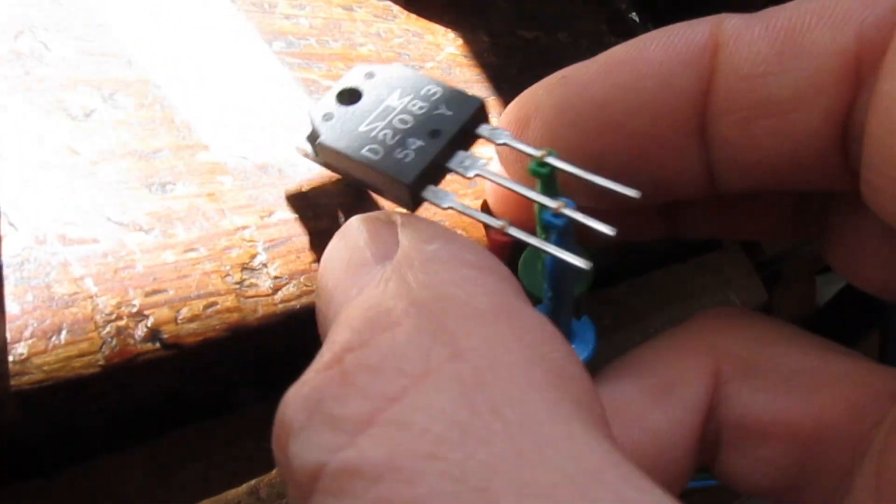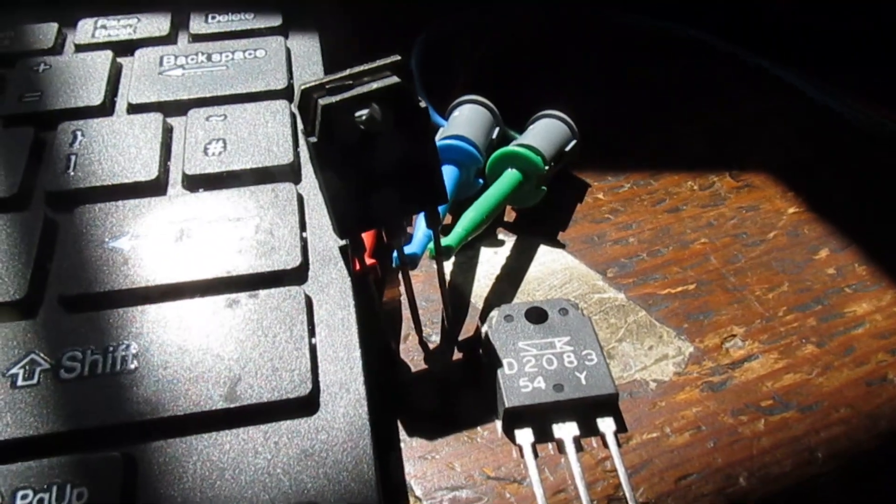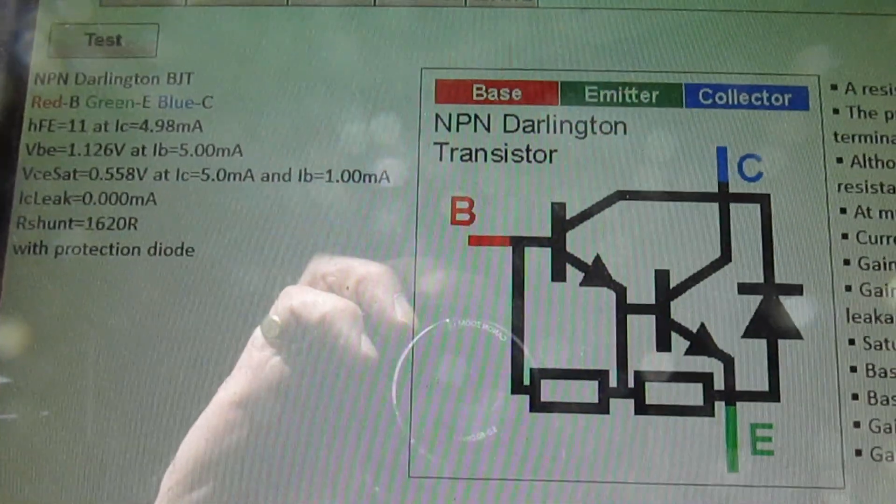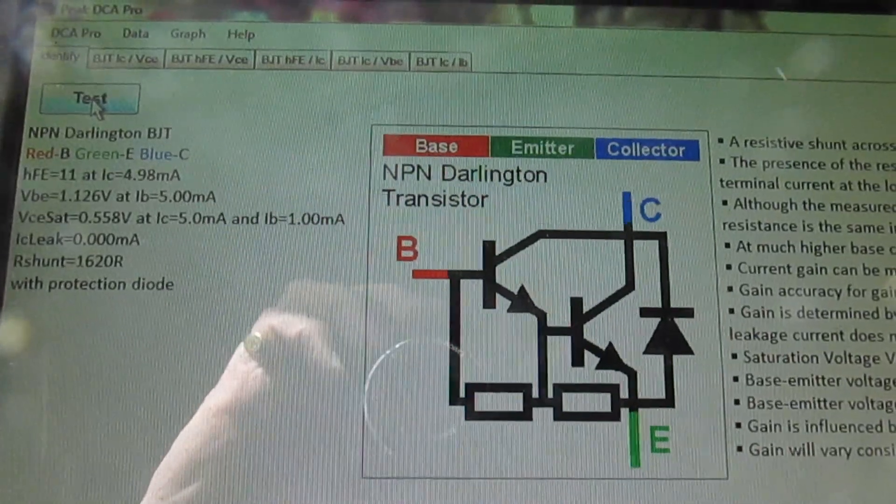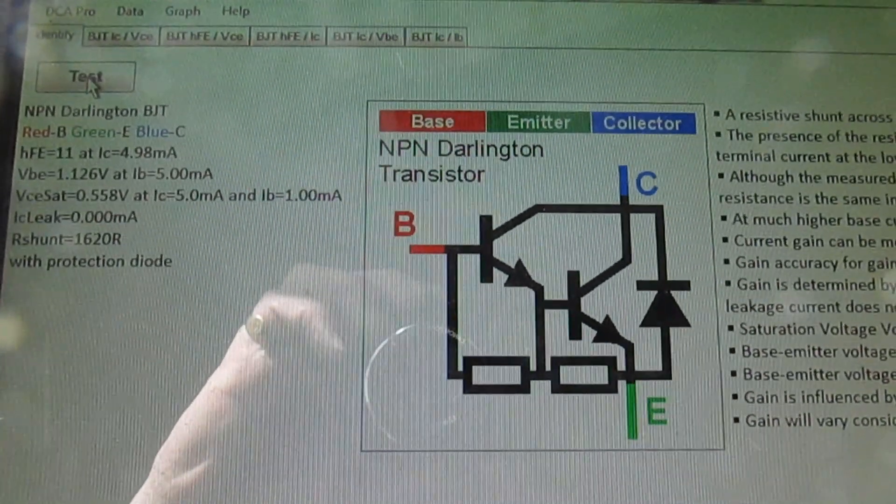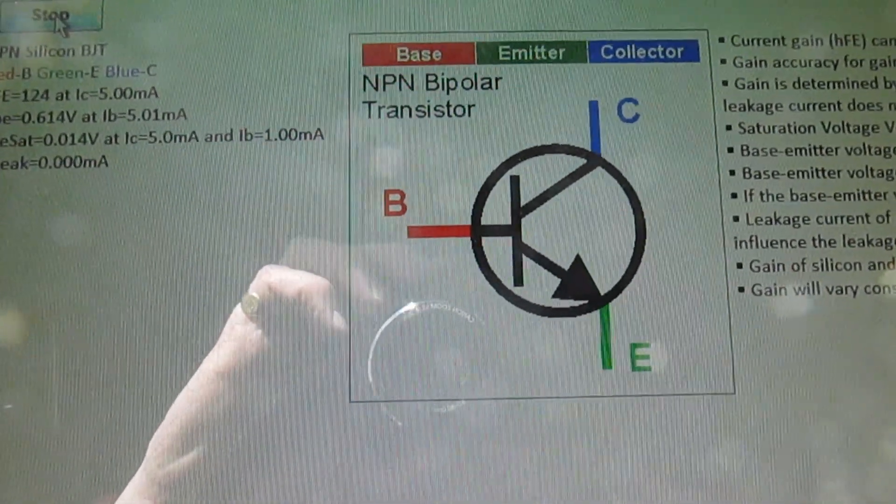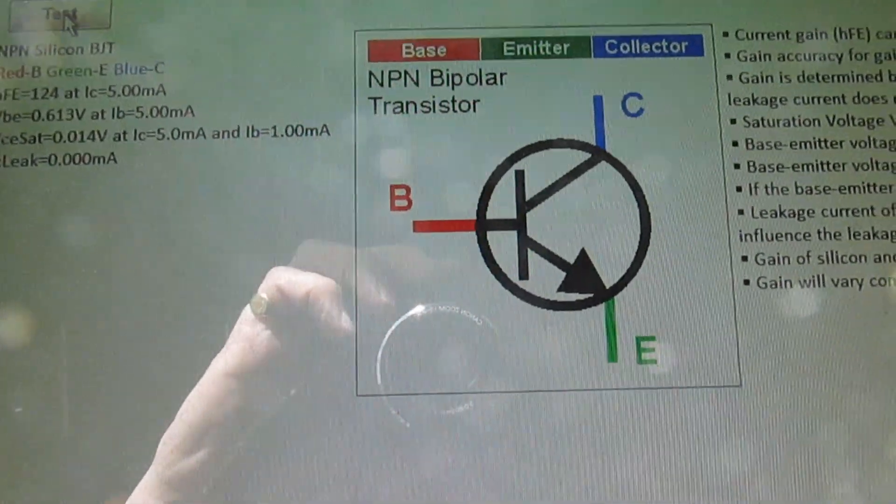Now let's put in the fake one that I've just bought. There we go, that's the fake one now connected up. What do you think is going to happen when we press this button? Let's press the button that says Test and look at that: the fake one's not even a Darlington transistor. It's just an ordinary NPN bipolar transistor.